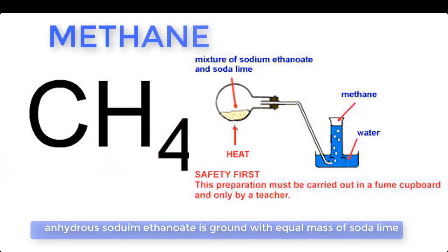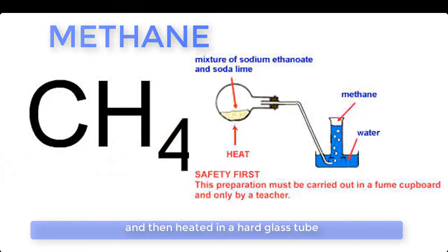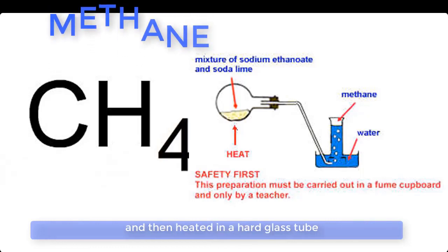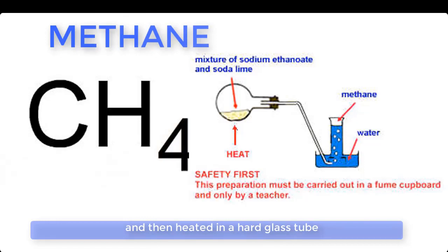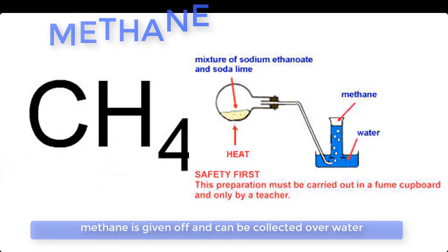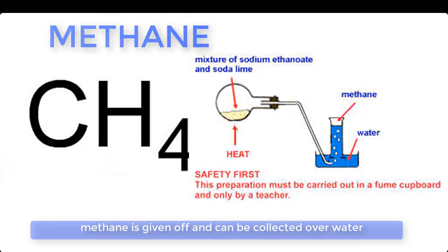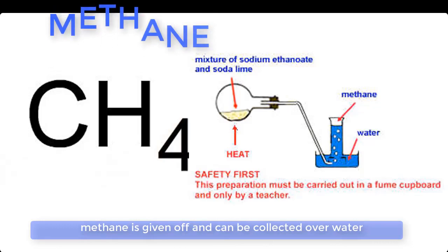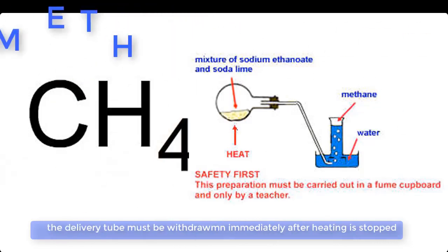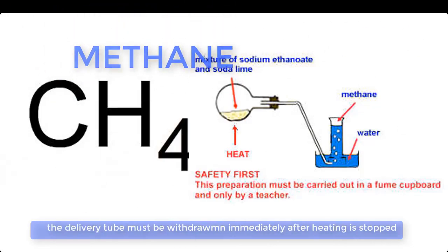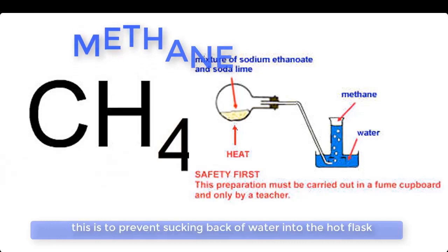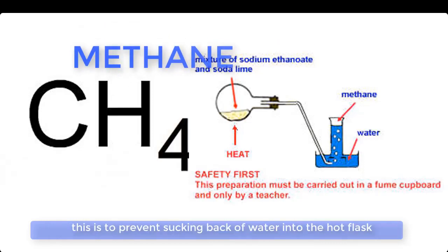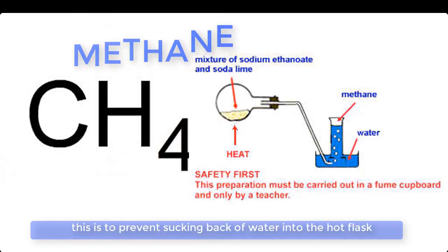Anhydrous sodium ethanoate is ground with an equal mass of soda lime and then heated in a hard glass tube. Methane is given off and can be collected over water. The delivery tube must be withdrawn from the water immediately after heating is stopped, to prevent the sucking back of water into the hot flask.